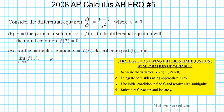Before we get started, this is a strategy that we are going to use to solve the differential equation. First we're going to separate the variables, then integrate both sides using the appropriate integration rules, use the initial condition to find C and resolve any sign ambiguities, and lastly substitute C back in and isolate Y, which will be the solution of our differential equation.